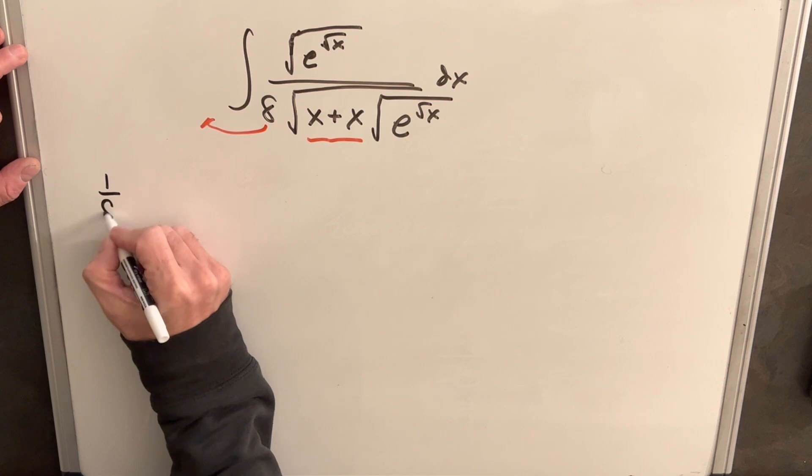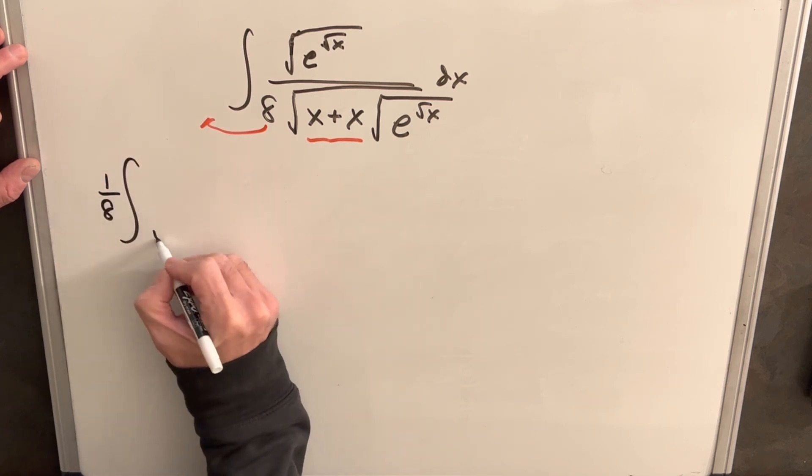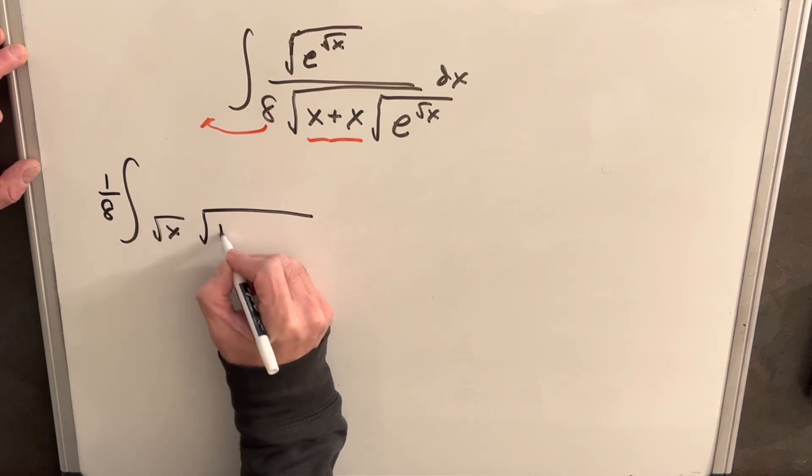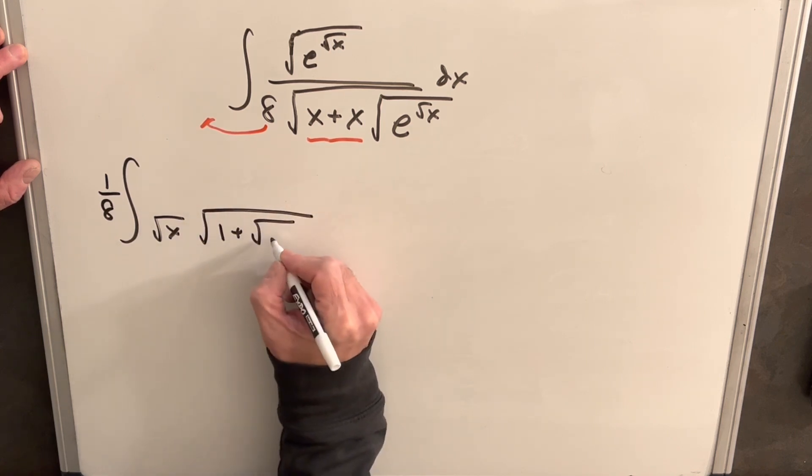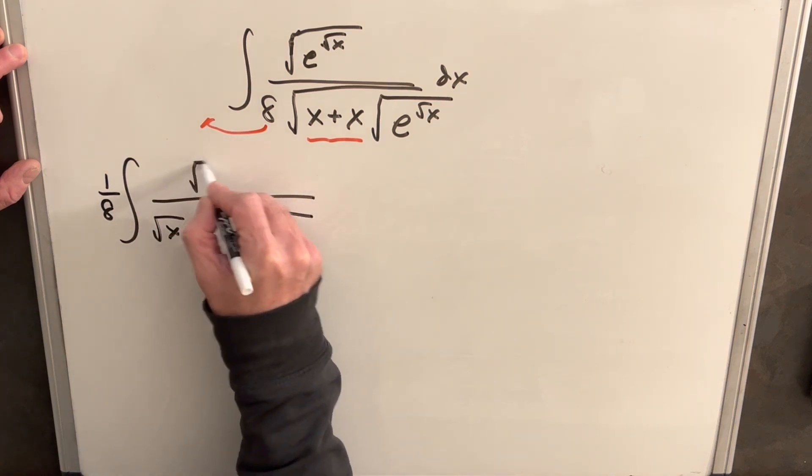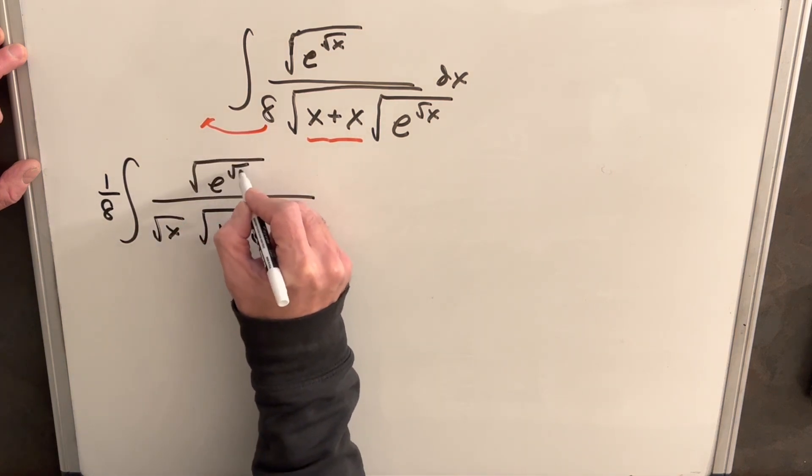So we're going to have 1 eighth and then I'm going to pull this square root of x entirely out, but we're still going to have a square root of 1 plus e to the square root of x in the denominator. And then we'll just have this same thing in the numerator, dx.